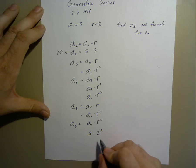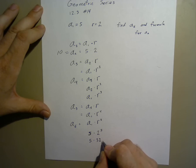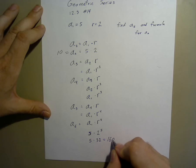2 to the 5th power is 32, so we have 5 times 32, which equals 160.